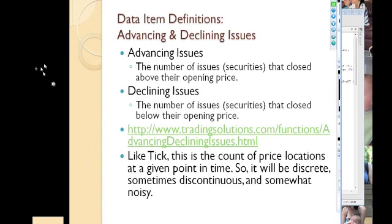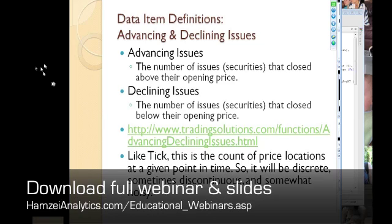With the standard S&P 500, you're pretty much guaranteed that the sum of those two numbers is going to approximate 500 unless you get a really odd day. They generally add up to about 480, 490, or a little bit higher. And who knows what those one, two, three, or four stocks that don't move are.